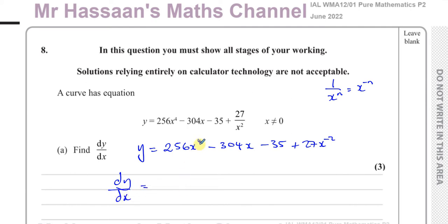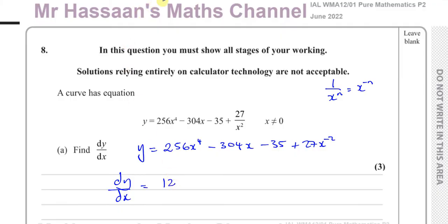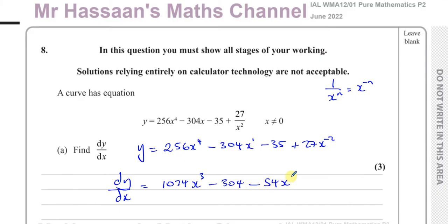dy/dx equals: multiply by the power — 4 times 256 is 1024 — so 1024x to the power of 3. Then for the 304x term, multiply by the power gives 1 times 304, and x to the power of 0 is 1, so it's just minus 304. The constant term becomes 0. And for 27x to the power of negative 2, multiplying by the power gives negative 54x to the power of negative 3.